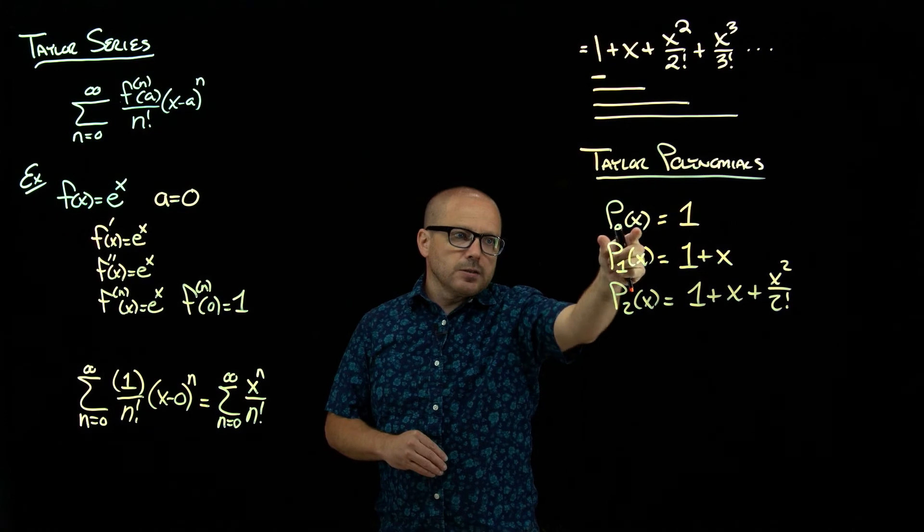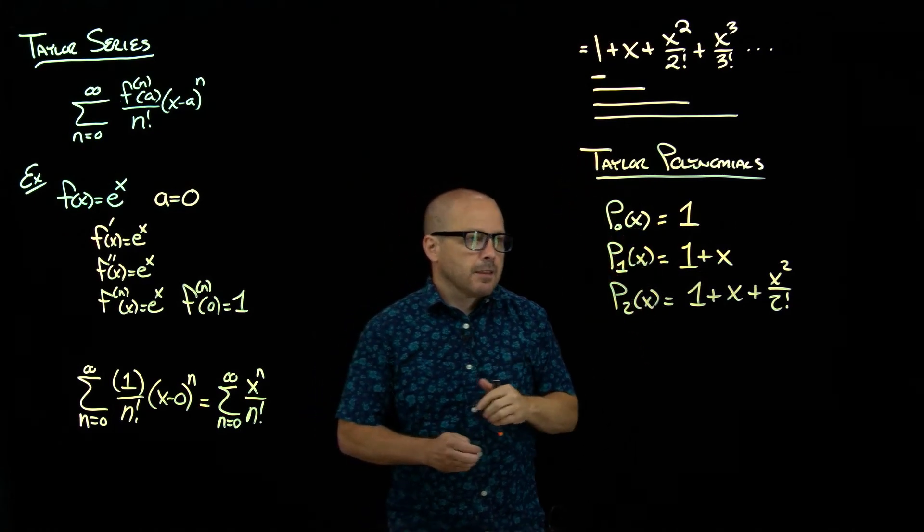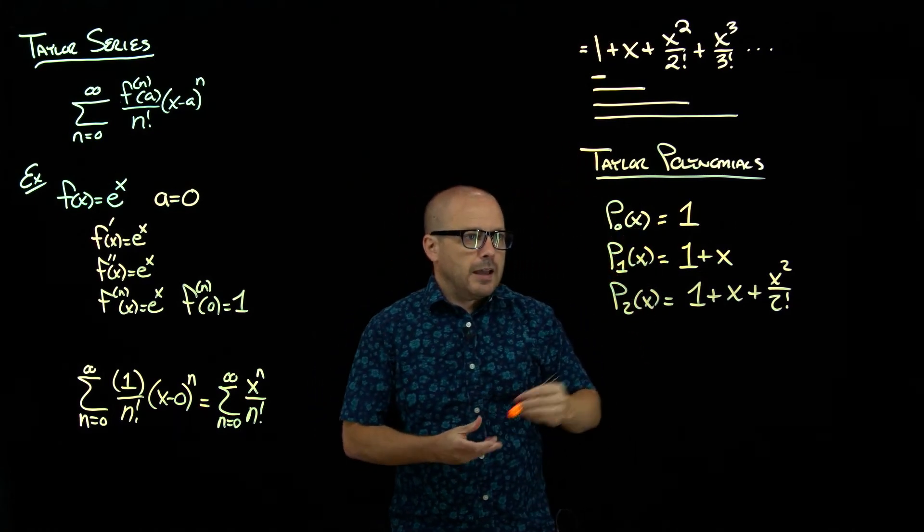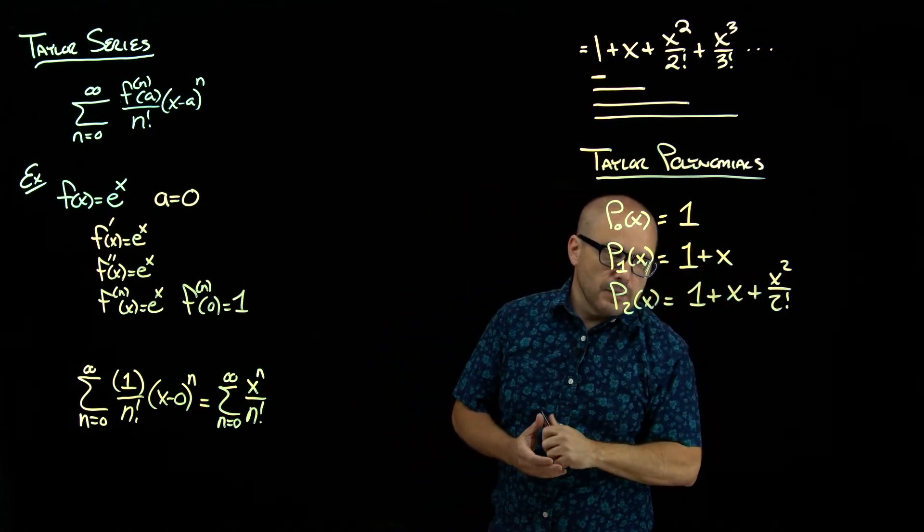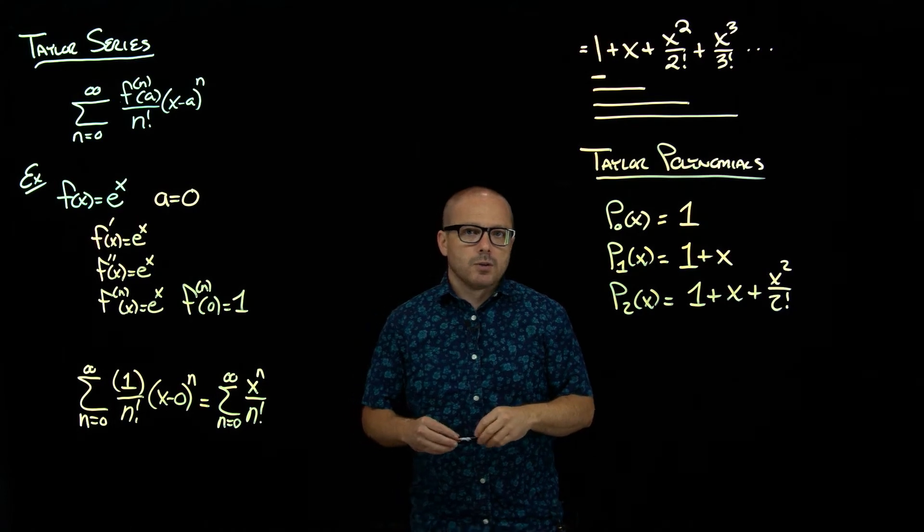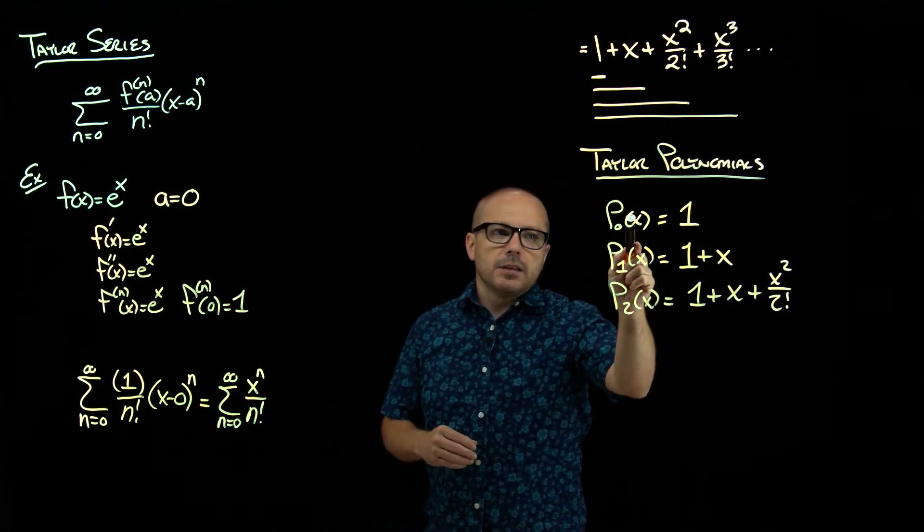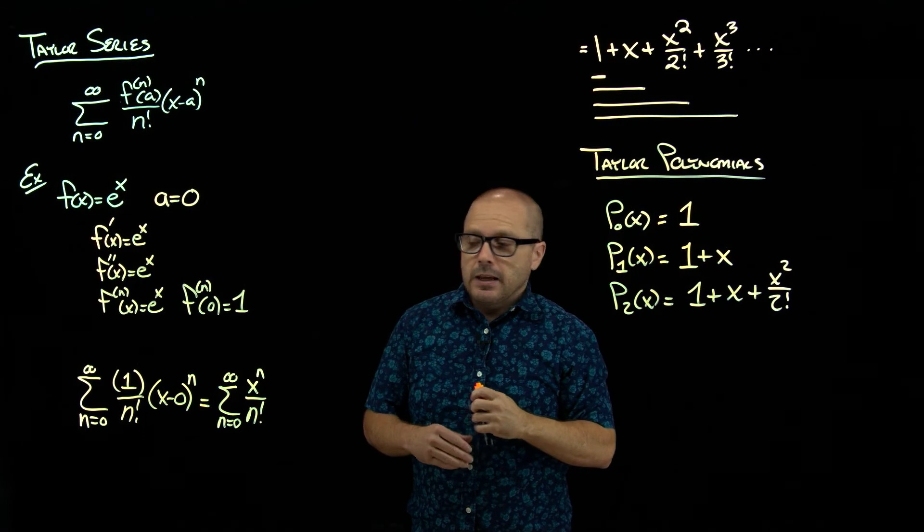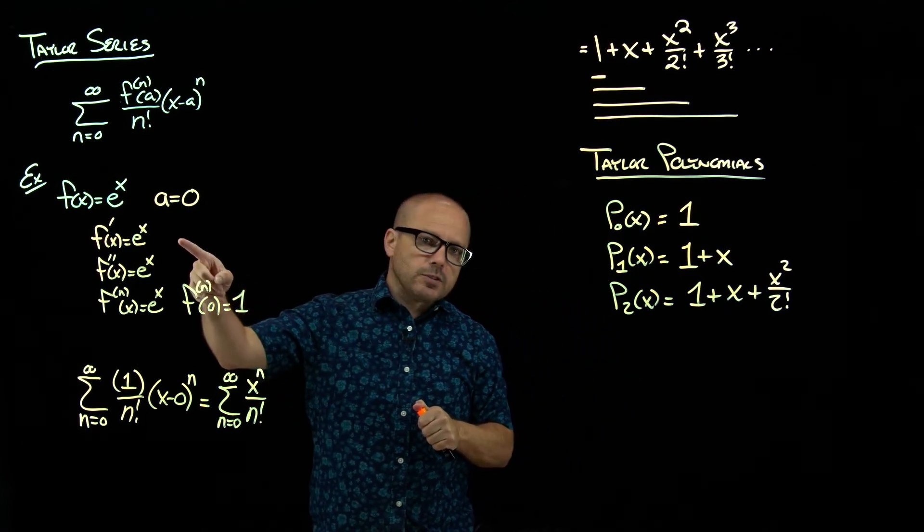So these are partial sums of our series. And because of the form of a power series, they end up being polynomials. So what I want to do is take a look at these Taylor polynomials and compare them to our original function.